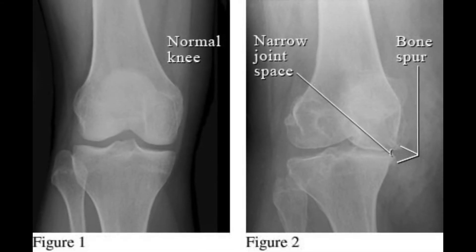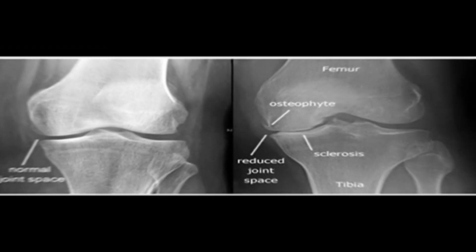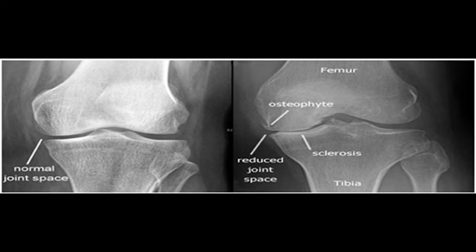Grade 0 is a normal healthy knee. Grade 1 shows very minor bone spur growth and is experienced with pain and discomfort. Grade 2 is where people will experience symptoms for the first time. Grade 3 is moderate osteoarthritis with frequent pain during movement, and joint stiffness is more pronounced, especially after sitting for long periods and in the morning.